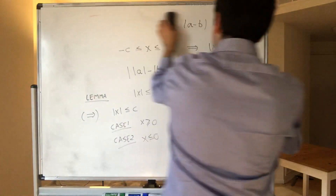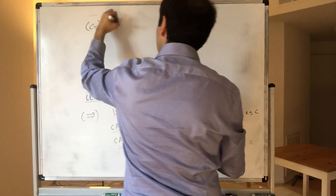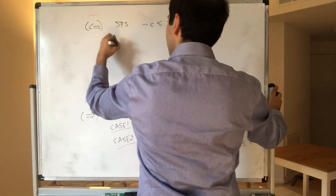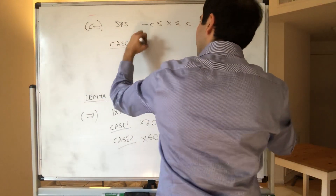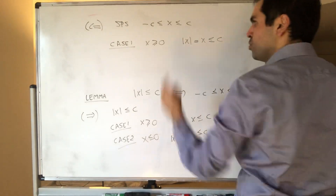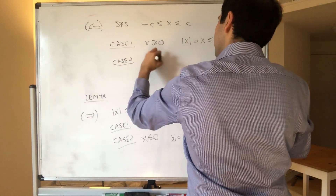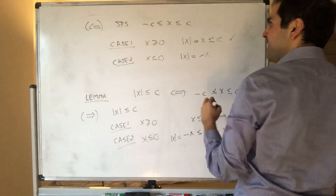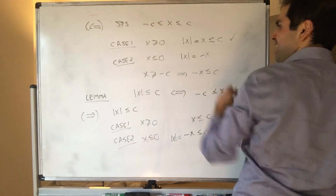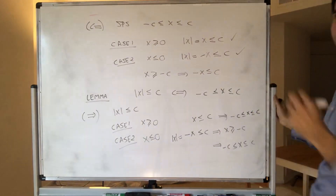On the other hand, suppose that x is squeezed between minus c and c. In case one, x non-negative: then absolute value of x equals x, and we know that this is less than or equal to c, so we're done. In case two, x negative: then absolute value of x is minus x. But we know that x is greater than or equal to minus c, so minus x is less than or equal to c. So absolute value of x, which is minus x, is less than or equal to c — and that's what we wanted to show.